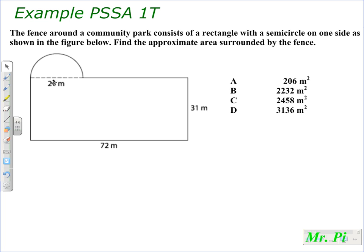This is an irregular shape because it's not our typical rectangle or circle. We have a combination of a rectangle and a semicircle. The key thing about a semicircle is that it is half of a circle. We are asked to find the area surrounded by the fence. Don't be fooled there. We don't want to find the perimeter. We want to find the area.